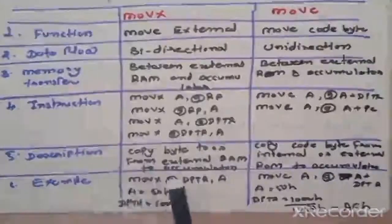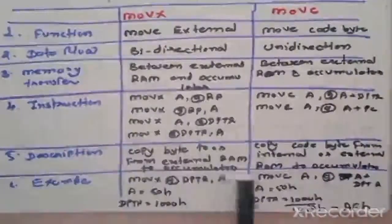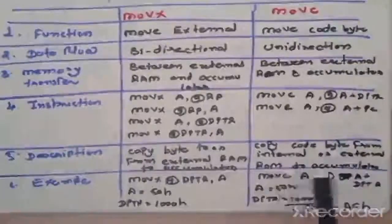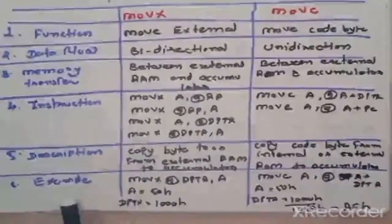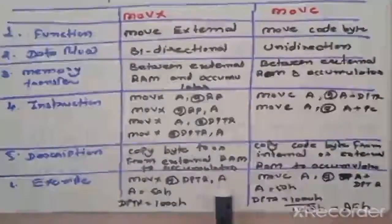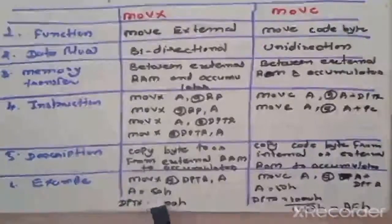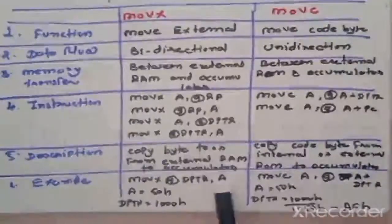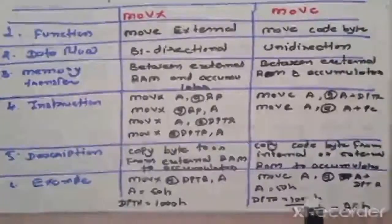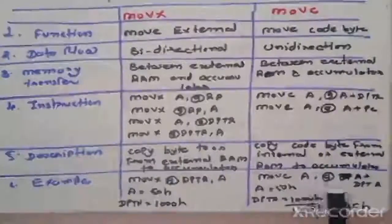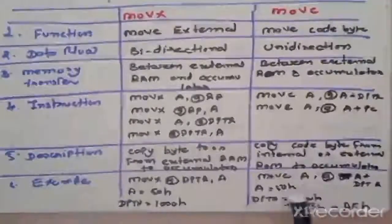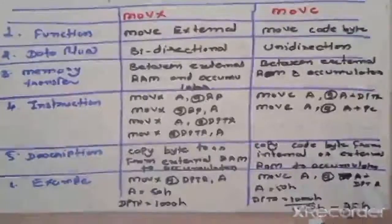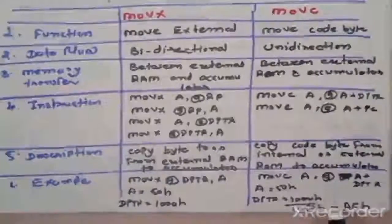Description: MOVX copies bytes to or from external RAM to accumulator. MOVC copies code bytes from internal or external ROM to accumulator. Example: MOVX A, @DPTR — suppose accumulator is 50H and DPTR is 1000H, then 50H is transferred to 1000H. For MOVC: MOVC A, @A+DPTR — content of A is 50H, DPTR is 1000H, so A plus DPTR equals 1050H, meaning content of 1050H is transferred to accumulator. Thank you.